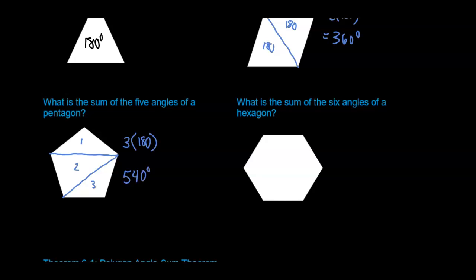And with a hexagon, we can draw 1, 2, 3, and we have four triangles. So we have 4 times 180, and that gives us 720 degrees.